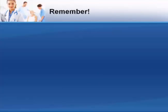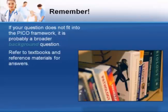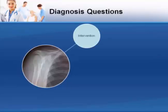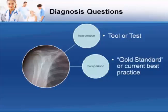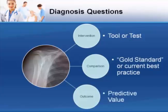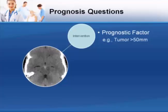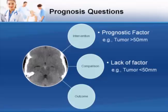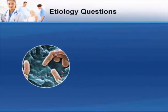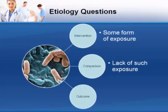There are a few points to keep in mind when using PICO. First, if your question does not fit into the PICO framework, it is probably a broader background question — refer to textbooks and reference materials for answers. For diagnosis questions, the diagnostic tool or test is the intervention, the comparison is the best tool or test (also known as the gold standard), and the outcome is the ability to predict the presence of disease. For prognosis questions, the intervention is a prognostic factor such as the size of a tumor or a complicating illness, the comparison is the lack of such a factor, and the outcome is the quantity of life that can be expected. For etiology questions, the intervention is some form of exposure, the comparison is the lack of such exposure, and the outcome is the progression to a disease state.